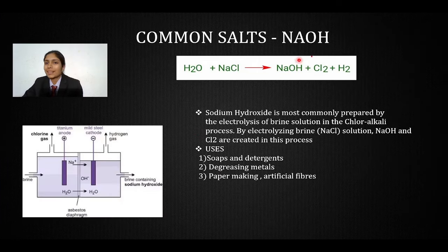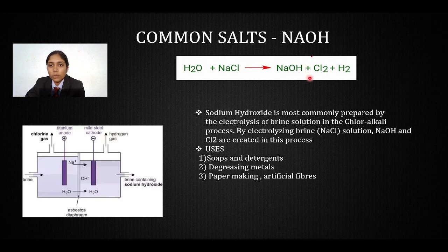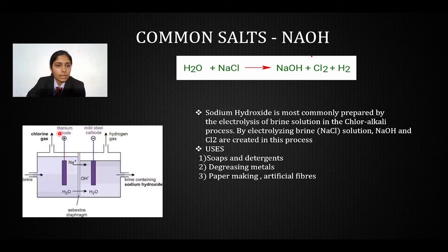Common salts — starting with NaOH, sodium hydroxide. It is commonly prepared by the electrolysis of brine solution (NaCl). When NaCl is electrolyzed, it is called the chloroalkali process, which produces NaOH, Cl₂, and H₂. The hydrogen gas is always released at the cathode and chlorine gas at the anode. Uses include making soaps and detergents, degreasing metals, paper making, and making artificial fibers.